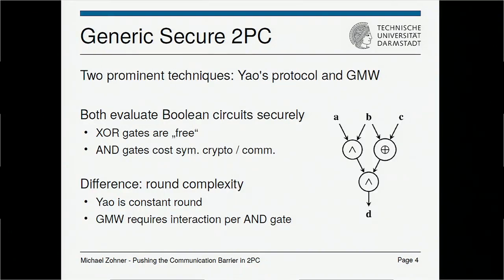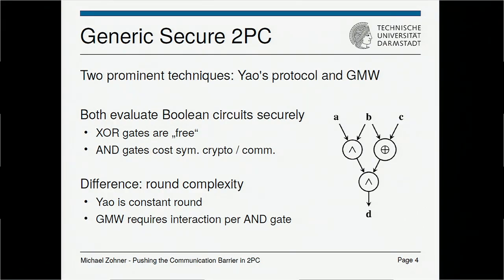If you want to implement your own secure computation application, a good starting point are generic secure techniques. One is the Yao's Garbled Circuits protocol, and another is the GMW protocol. How these protocols work is you take your function and represent it as a Boolean circuit. We get XOR gates for free, but AND gates must be paid for with symmetric crypto operations such as AES or with communication. So what really matters is the number of AND gates in the circuit.